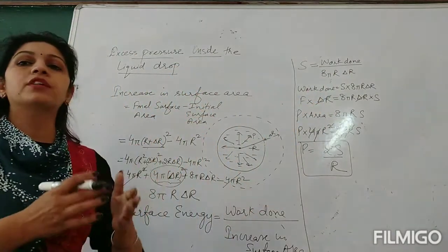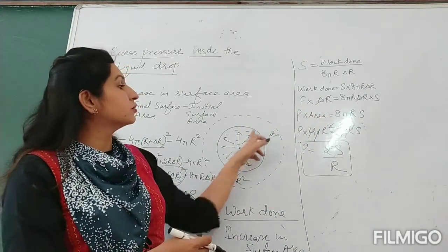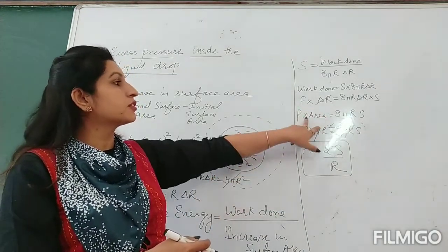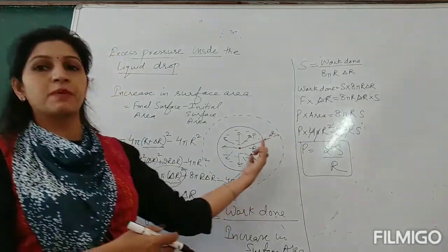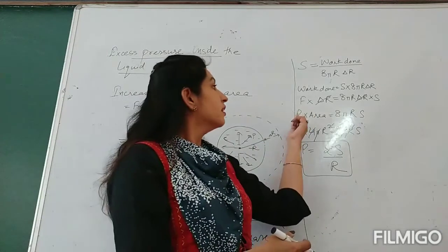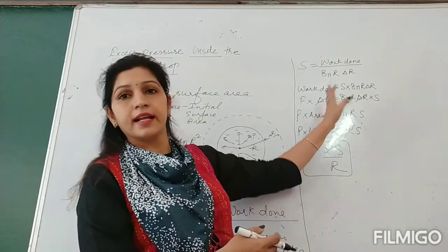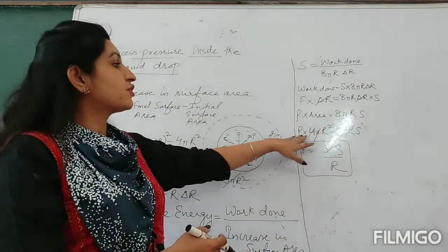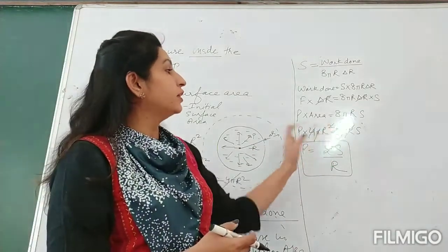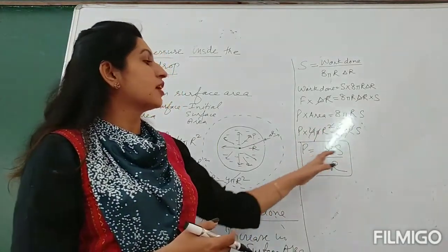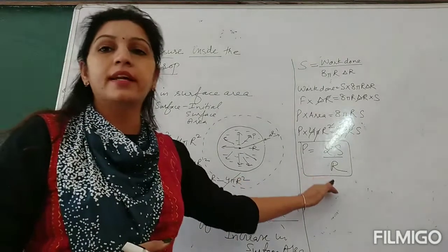Then we wrote work done as force times distance. Force is due to the pressure, so force equals pressure times area, and distance traveled is delta r. Writing P × area × δr = S × 8πR·δr, delta r cancels, and substituting area = 4πR², we get pressure P = 2S/R. This is the excess pressure inside the liquid drop.